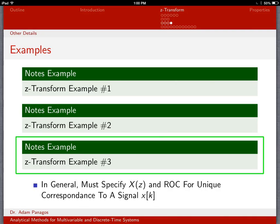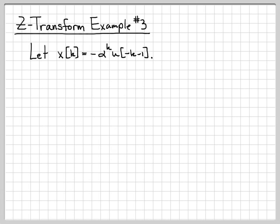Let's continue working our z-transform examples. We're going to work z-transform example number three now. In this example, we are going to work with the signal x[k], which is equal to -α^k u[-k-1]. We're going to find the z-transform and the region of convergence of the z-transform.